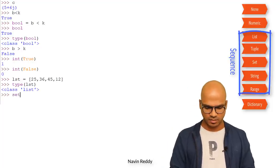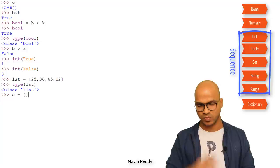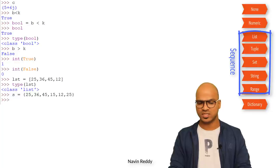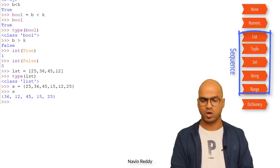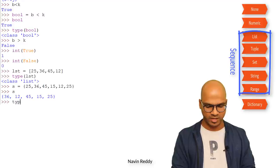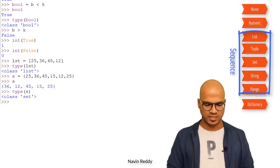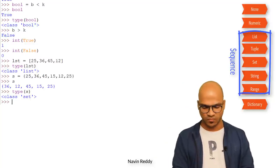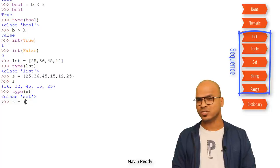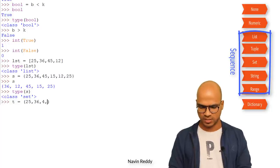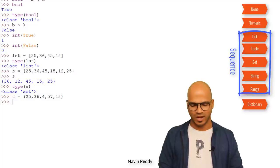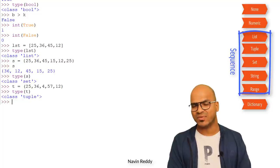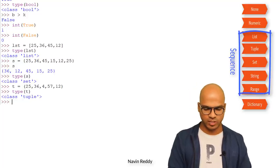The same can be done with set. I define s = {values in curly brackets} and you can see the values don't repeat. If I check type(s), it says set. We also have tuple — I define t = (25, 26) with round brackets. Checking type(t) gives tuple. These are all sequence types.